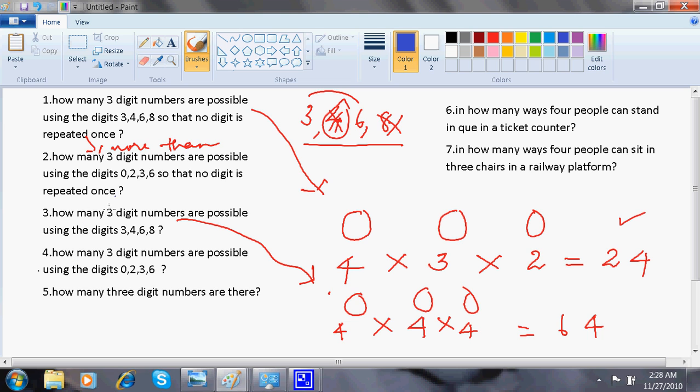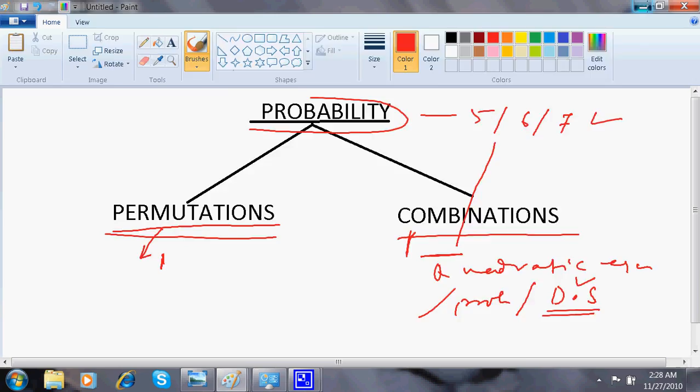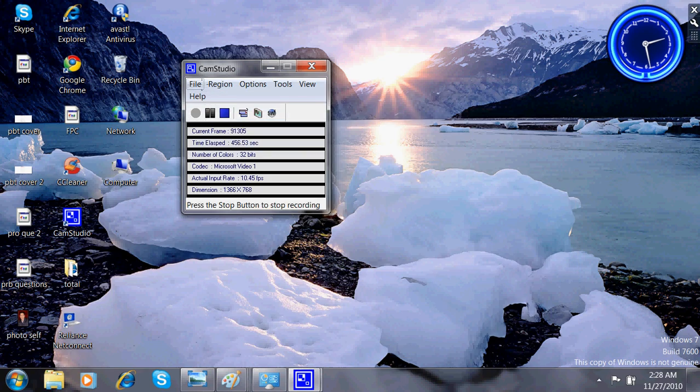Now, if I will give you this question. How many three digit numbers are possible using the digits 0, 2, 3, 6 so that no digit is repeated, again more than once. Please join me in my next video because I am running short of time. Thanks for watching.